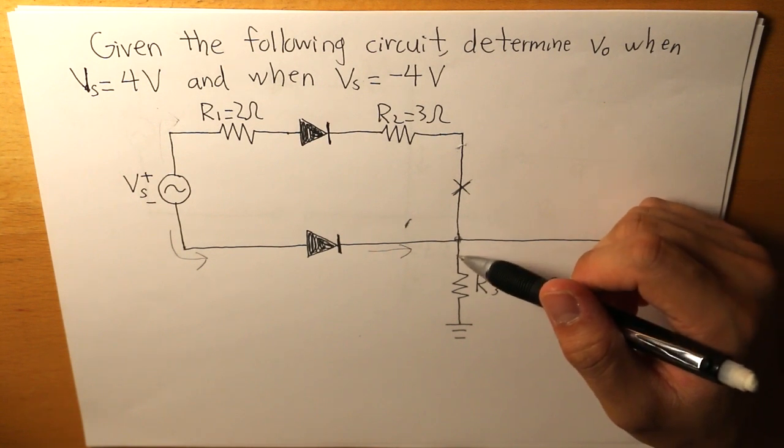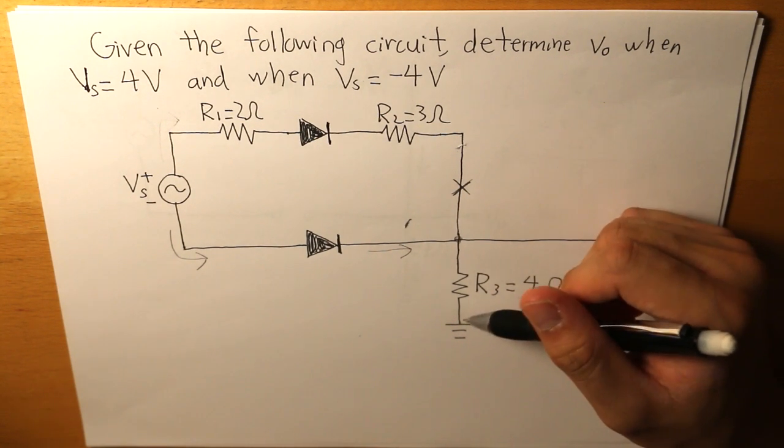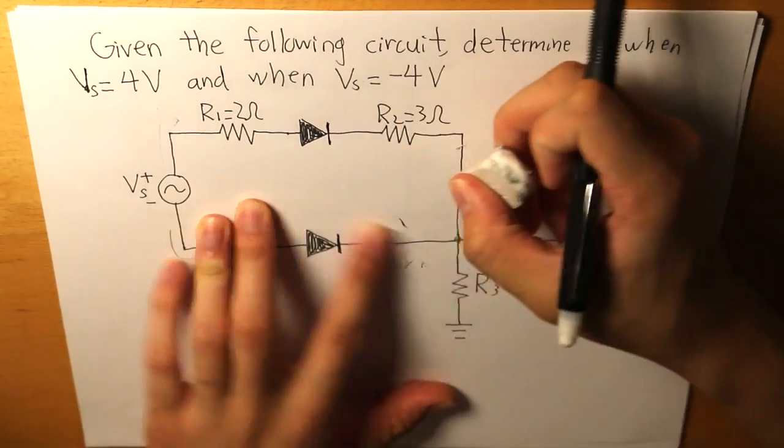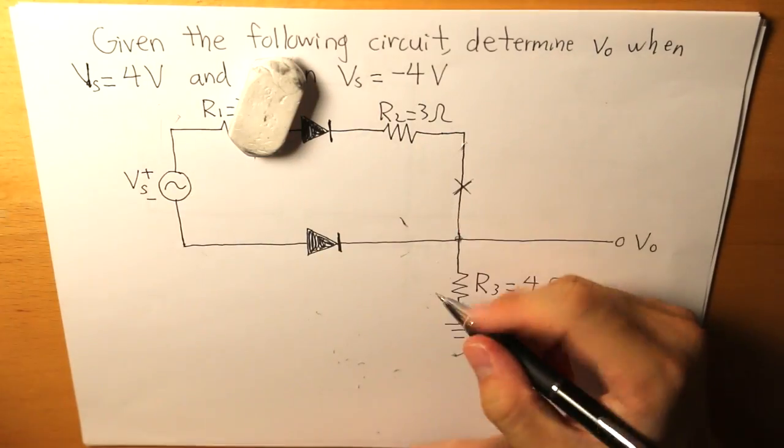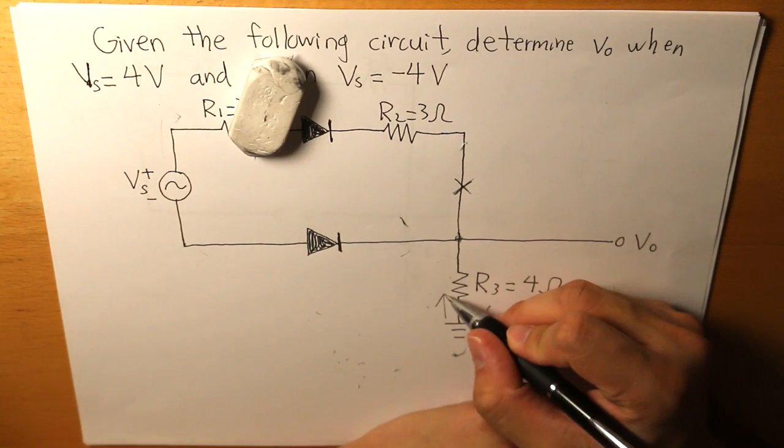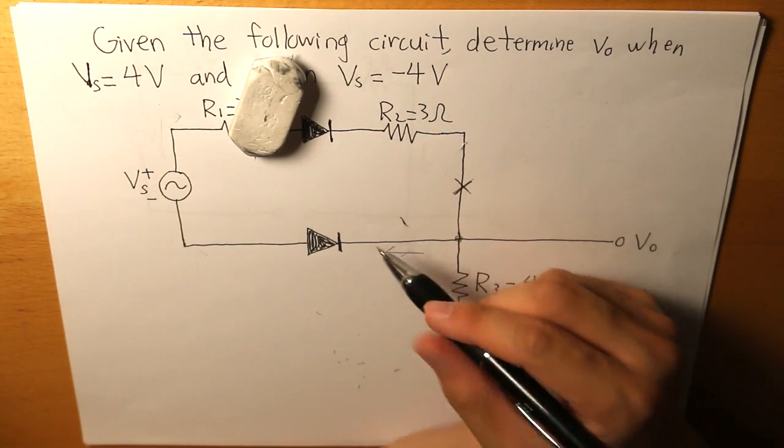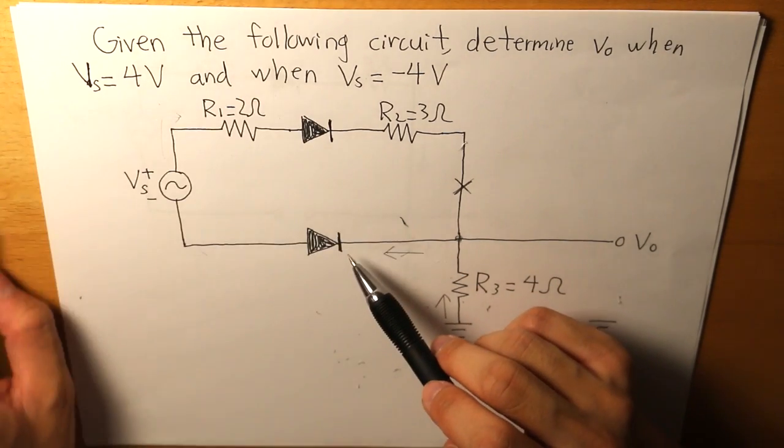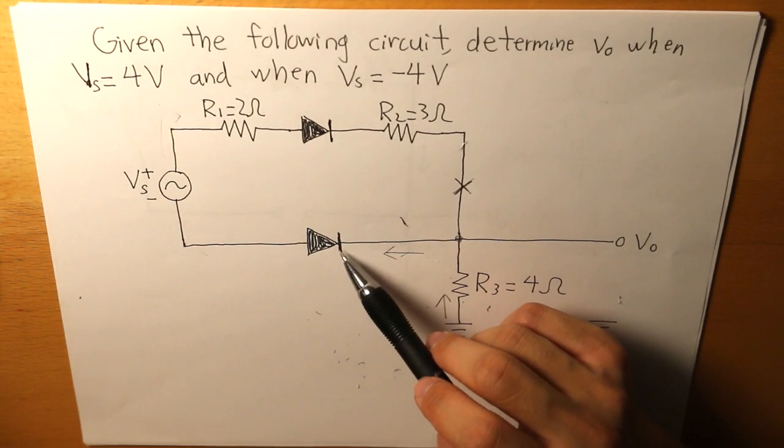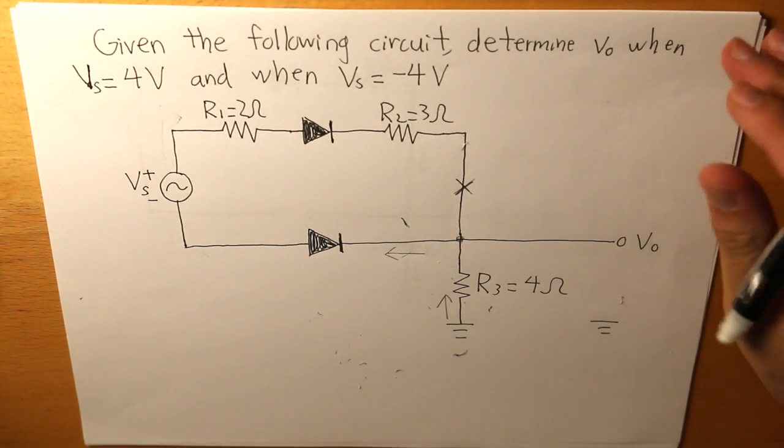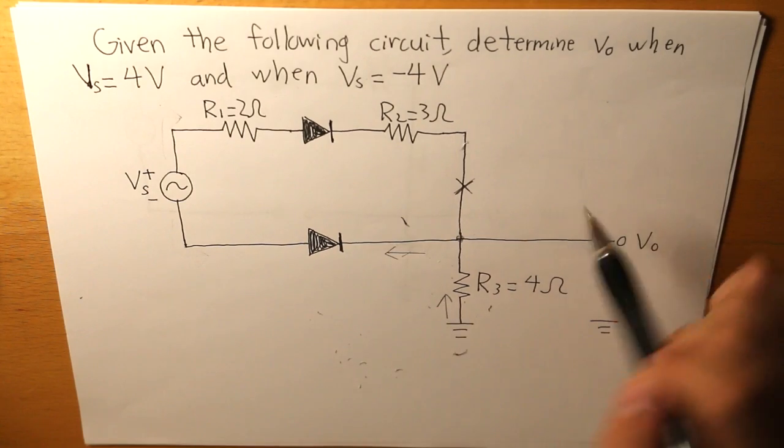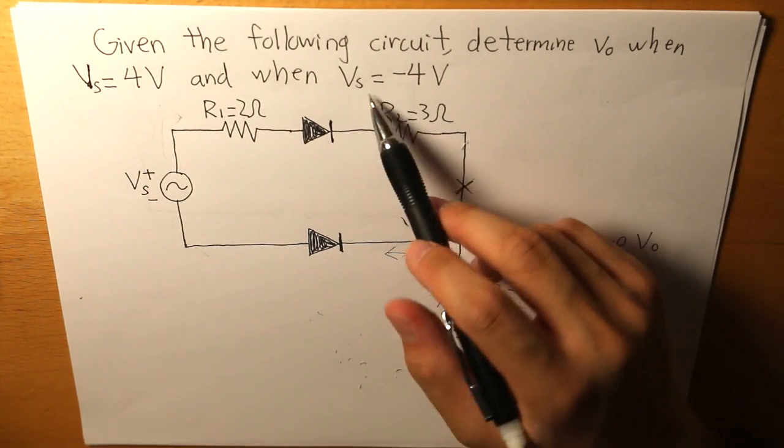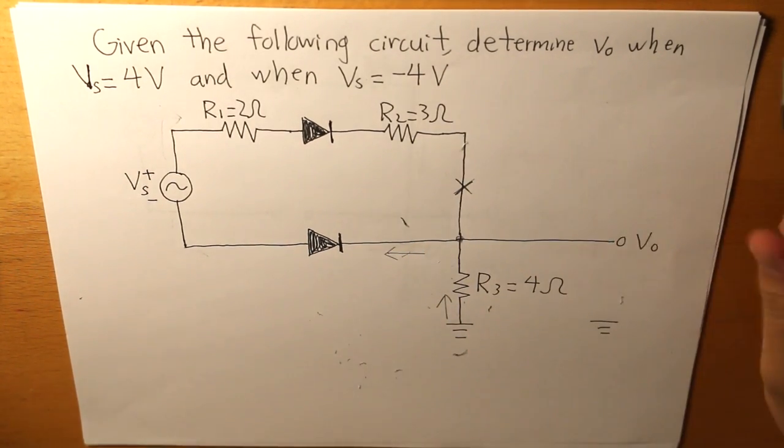Now, if the current is flowing through this wire, then the current is basically not going to flow through this direction, but flow from the ground. And then it tries to flow through here, but it cannot, because this diode is blocking it. And because this diode is blocking it, no current could travel anywhere when the voltage source is equal to negative 4 volts.